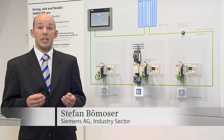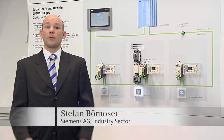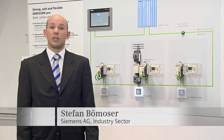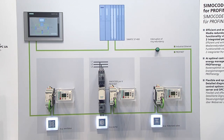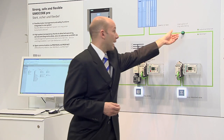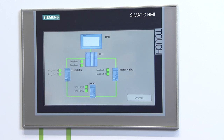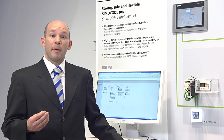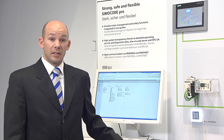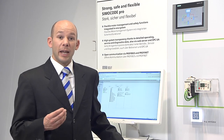Thus, one of the essential highlights is that you can now take advantage of the media redundancy function of PROFINET. If one path of a network set up in a ring topology is interrupted, a complete breakdown of communication is prevented, which increases availability and helps to avoid plant standstills.